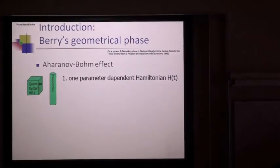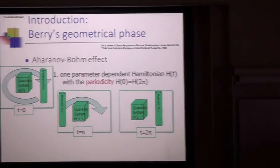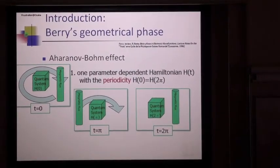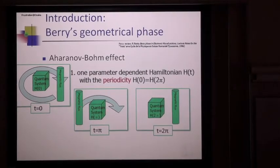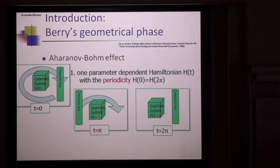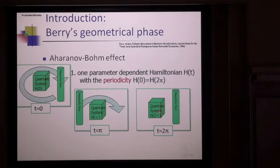At t equal to zero, this is the original Hamiltonian. At t equal to π, the magnetic flux runs around this box. At t equal to 2π, the situation corresponds to the original one. This is the periodicity of the one parameter dependent Hamiltonian we imposed.